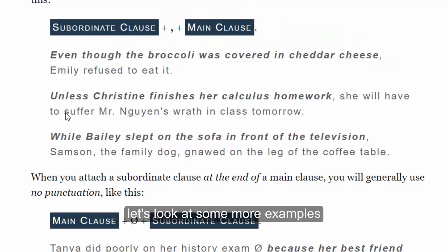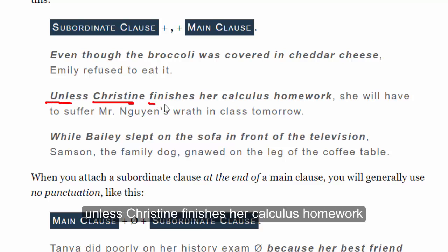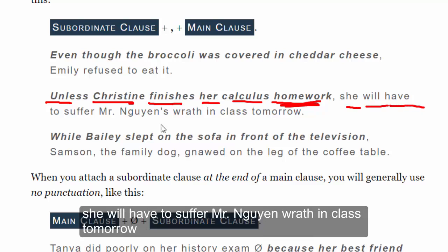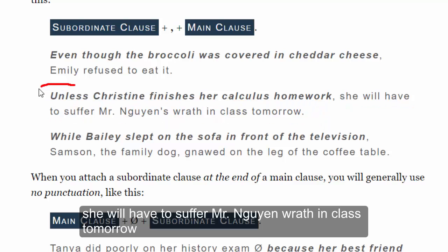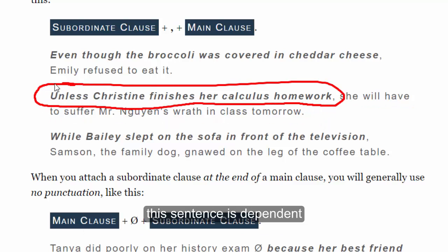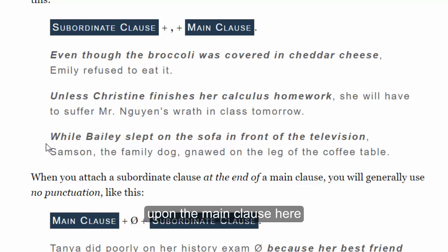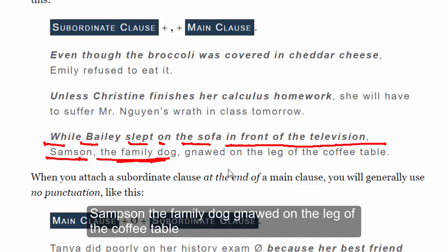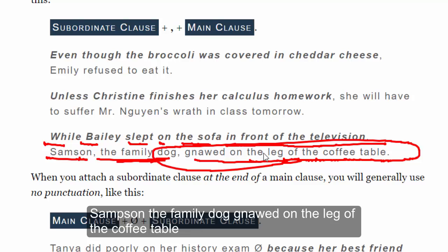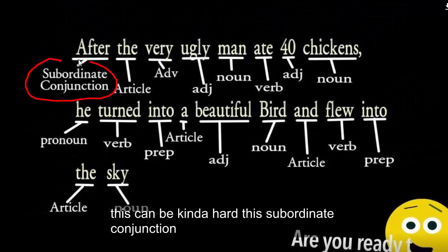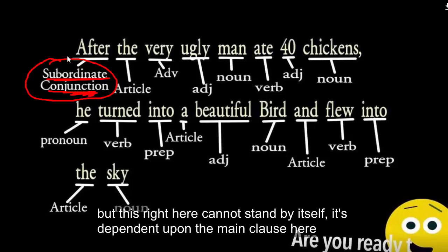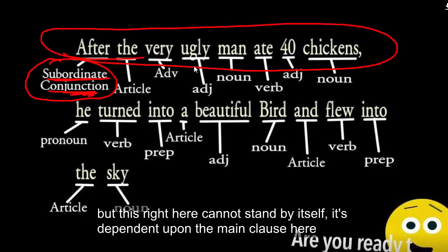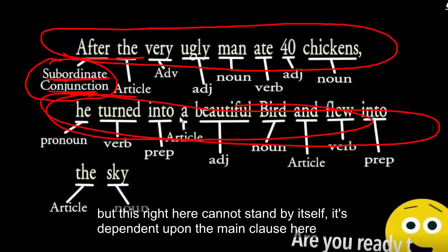Let's look at some more examples. 'Unless Kristen finishes her calculus homework, she will have to suffer Mr. Nguyen's wrath in class tomorrow.' The 'unless' clause is dependent upon the main clause. Another example: 'While Bailey slept on the sofa in front of the television, Samson the family dog gnawed on the leg of the coffee table.' This subordinate clause cannot stand by itself — it's dependent upon the main clause.